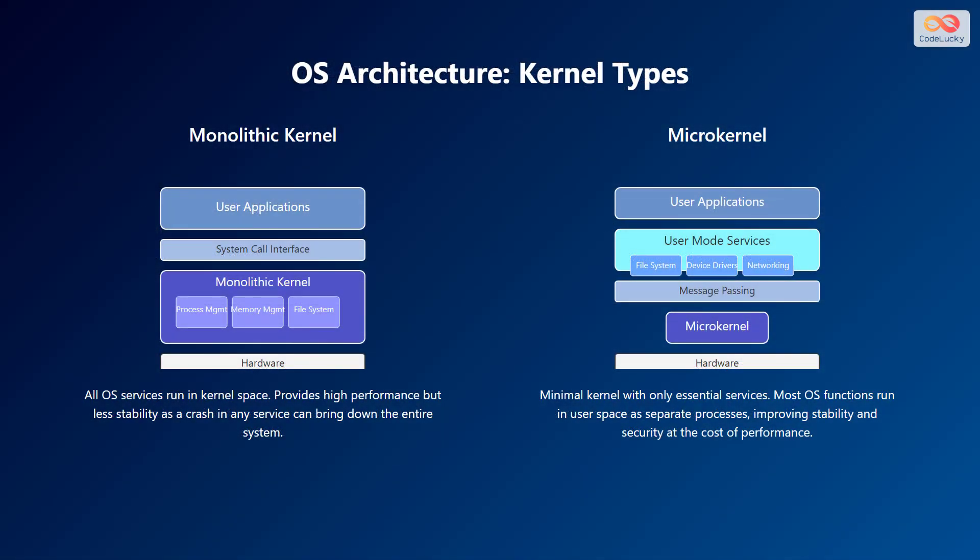The core of an operating system is its kernel, which comes in different architectural types. A monolithic kernel runs all operating system services in the kernel space, providing high performance but less stability, as a crash in any service can bring down the entire system. A microkernel has a minimal kernel with only essential services; most OS functions run in user space as separate processes, improving stability and security at the cost of performance. In a monolithic kernel, all services like process, memory, and file management reside inside the kernel along with the system call interface. In a microkernel, user mode services, file systems, device drivers, and networking and message passing are separate, with only the microkernel sitting between them and the hardware.